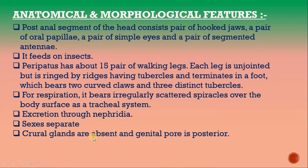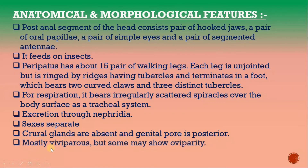The sexes are separate. Crural glands are absent and the genital pore is posterior. Most species are viviparous, but some may show oviparity.